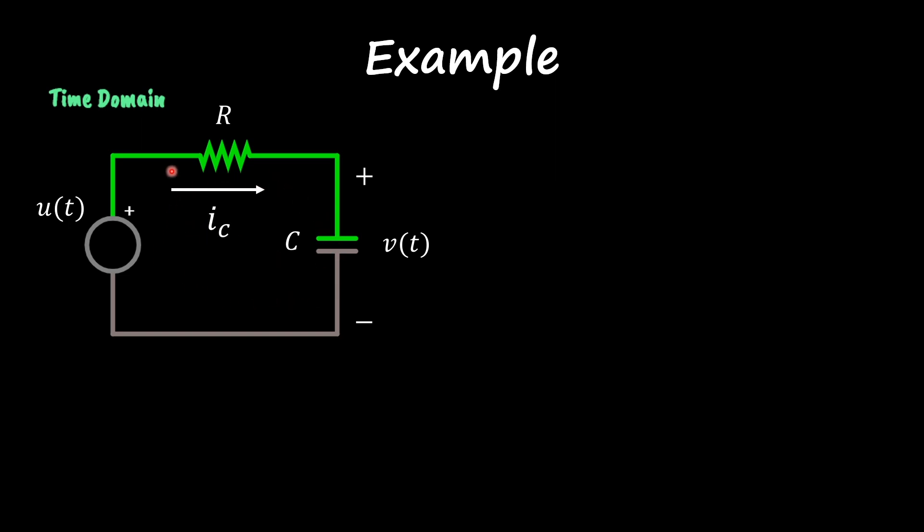If I apply Ohm's law across this resistor, I get my step function u(t) minus the voltage across the capacitor, divided by the resistor. It's equal to the current in the circuit, which is the current flowing through the capacitor.